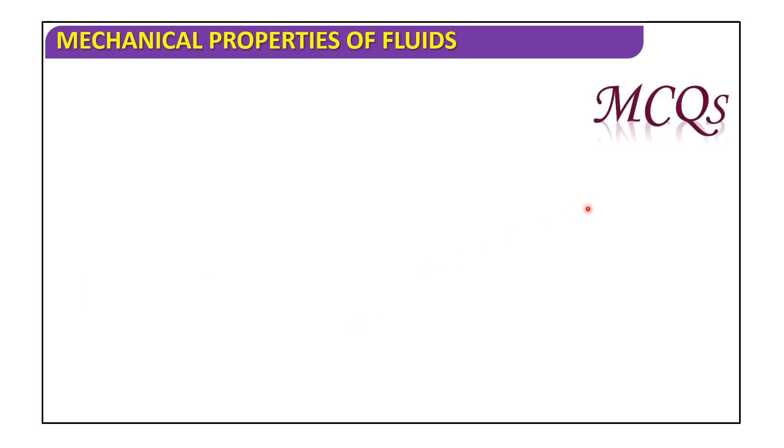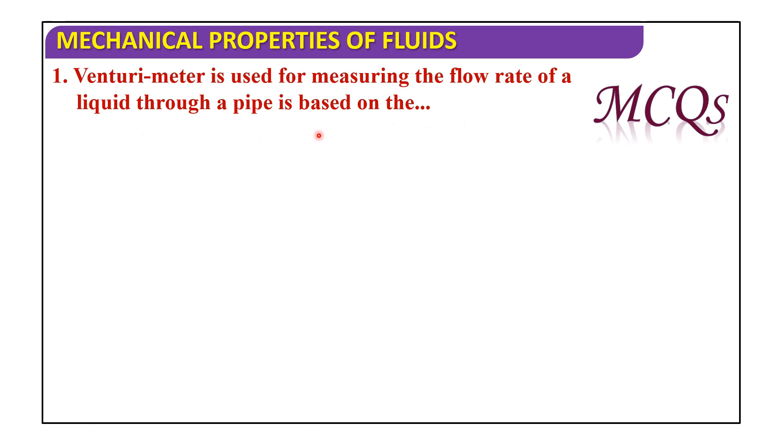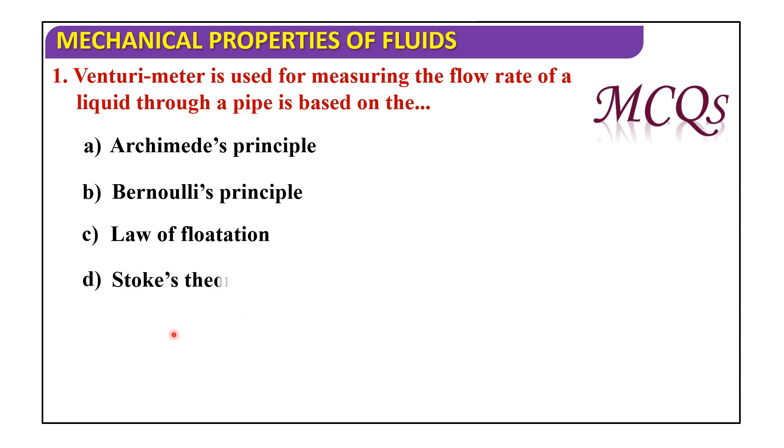Now, discuss MCQs. Venturi meter is used for measuring the flow rate of a liquid through a pipe is based on: Archimedes' principle, Bernoulli's principle, Law of Flotation, Stokes theorem. So, this venturi meter is used for measuring the flow rate of a liquid through a pipe is based on Bernoulli's principle.